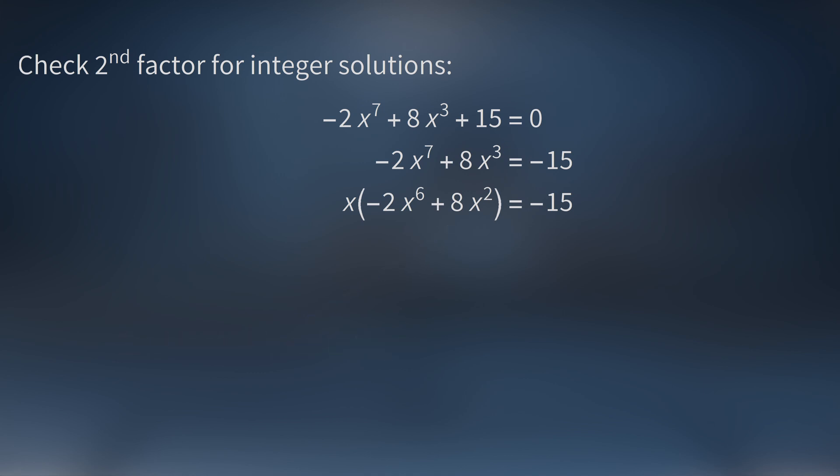So on the left-hand side, both factors are integers. This means that x must divide negative 15. This is the key. All we have to do is make a list of all divisors of negative 15 and check them one by one.